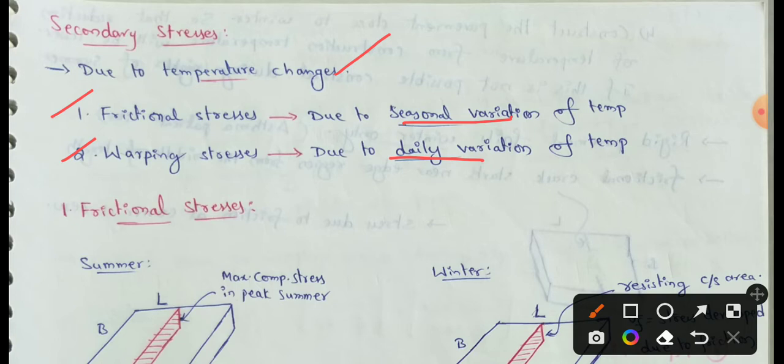We will focus on Frictional Stresses due to Seasonal Variation. Seasonal Variation means Summer and Winter. In these seasons, temperature variations act as Frictional Stresses. Warping Stresses relate to the Daily Variation — Day and Night — where this variation in a single day acts as Warping Stresses.